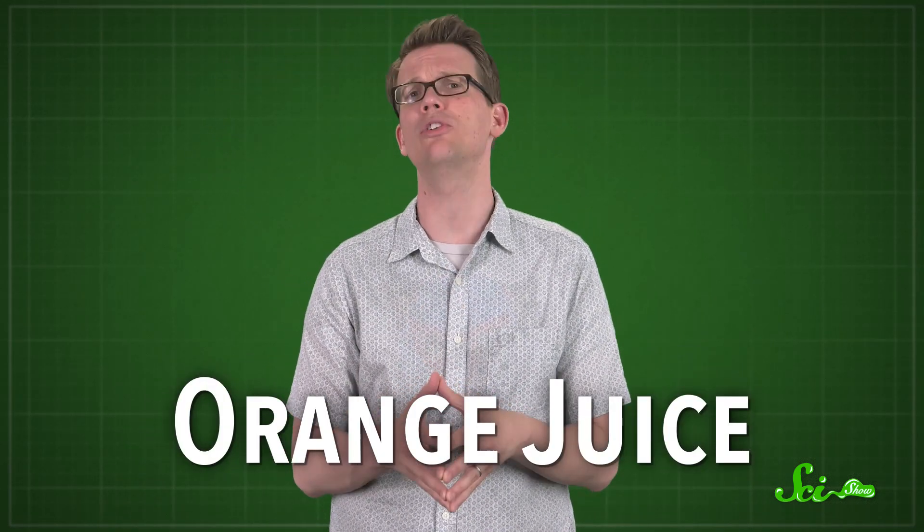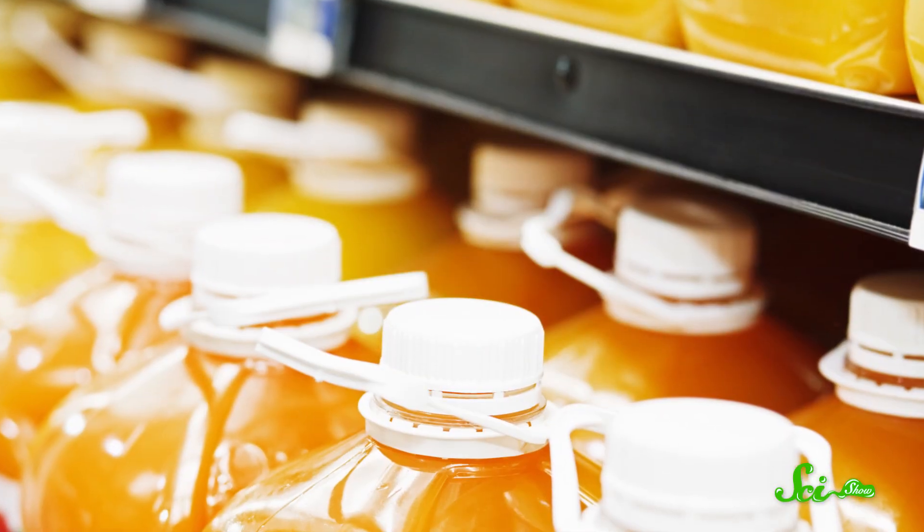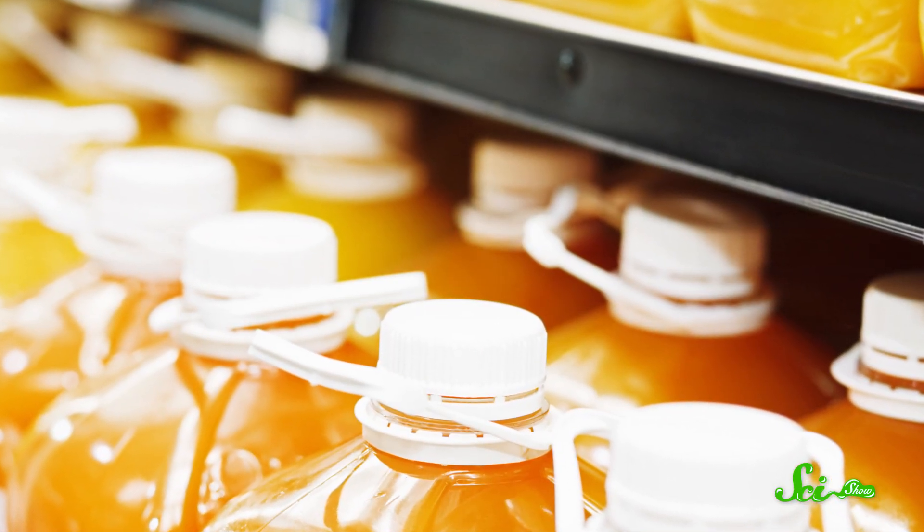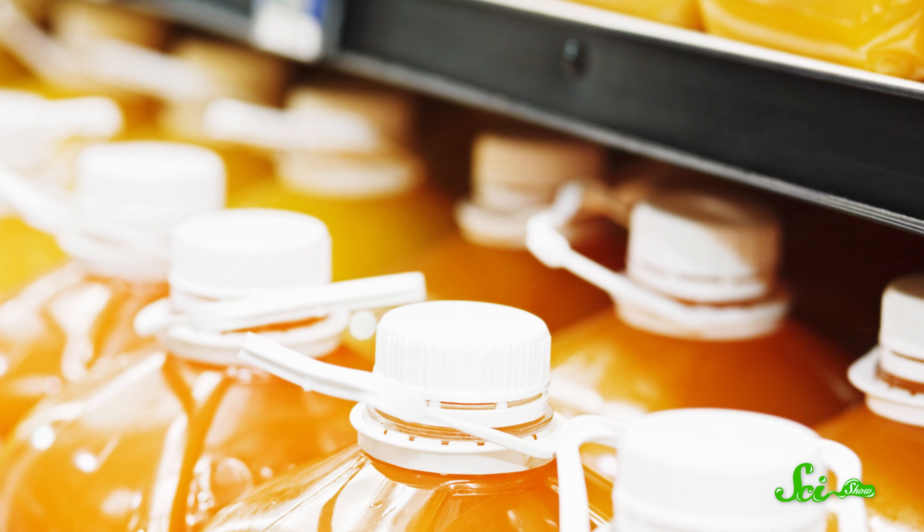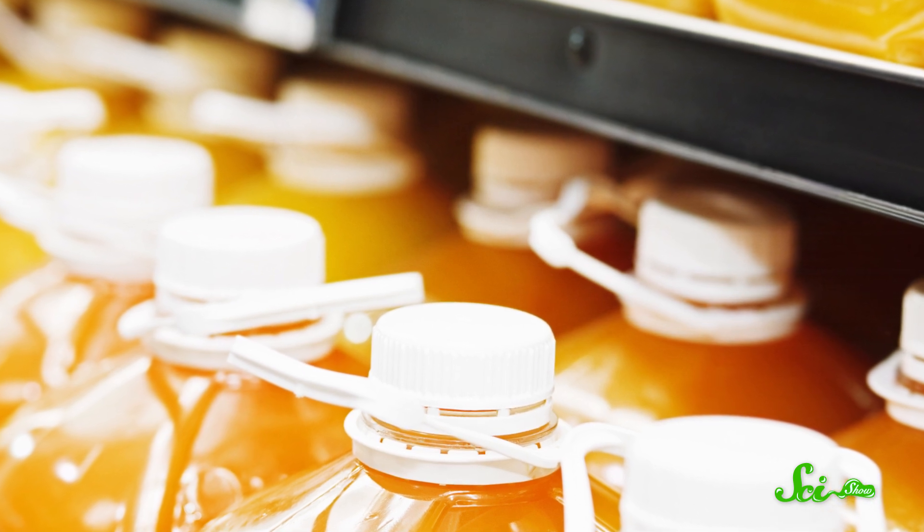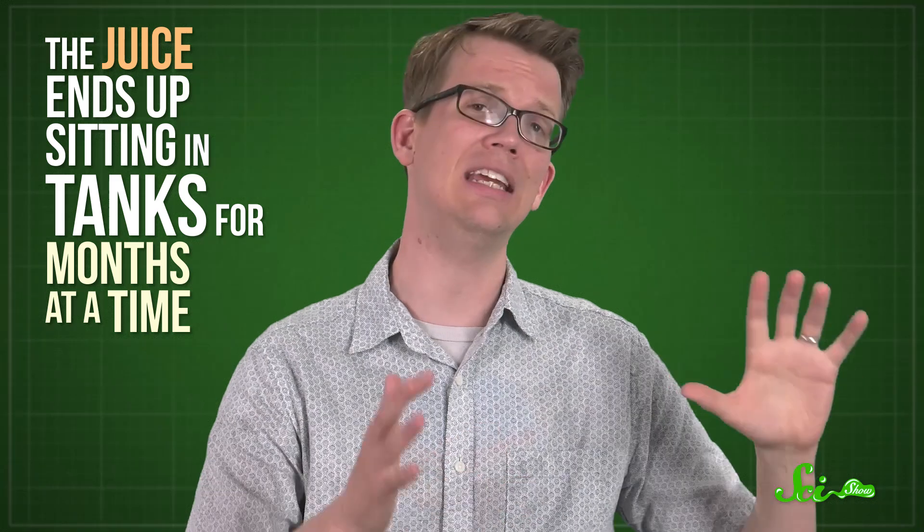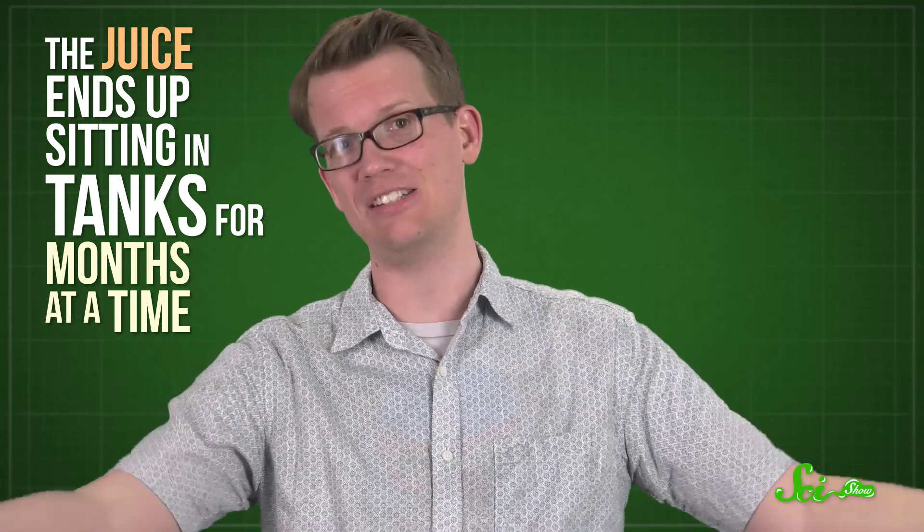Perhaps the most misleading example of this is orange juice. Americans used to get most of their orange juice from concentrate, but these days we tend to buy it in cartons where the juice doesn't need to be diluted. It seems like a fresher option, and companies have marketed it that way to get a premium price. But the juice isn't as fresh as they make it sound. Because of the realities of large-scale production, the juice ends up sitting in tanks for months at a time. To keep it from spoiling, producers pasteurize it, and also remove all the oxygen in a process called deaeration.